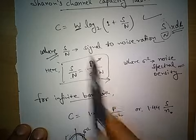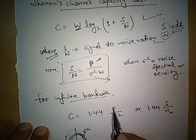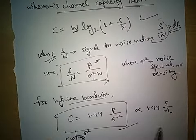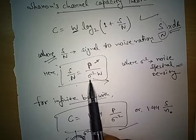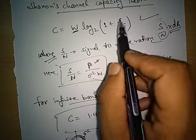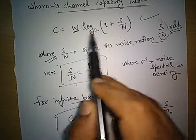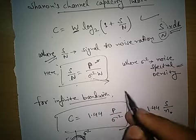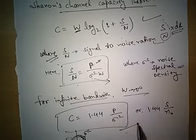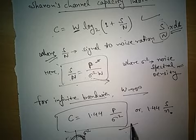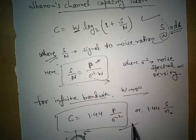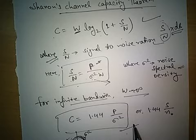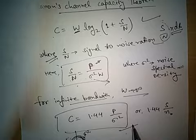For infinite bandwidth, the channel capacity result becomes 1.44 × P/σ². These two relations must be known: S/N equals P/(σ²W) in general form, giving C equals W log₂(1 + P/(σ²W)). The total channel capacity for infinite bandwidth, when W tends to infinity, becomes C equals 1.44 × P/σ².